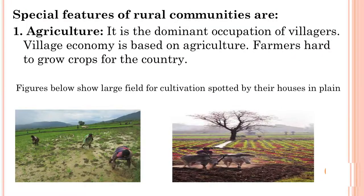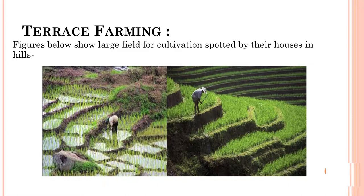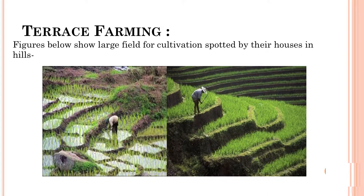First is agriculture — it is the dominant occupation of villages. Village economy is based on agriculture. Farmers work hard to grow crops for the country. Second is the joint family system, which is typical of Asian, particularly Indian life. It is a social and cultural institution found more in villages than in cities.